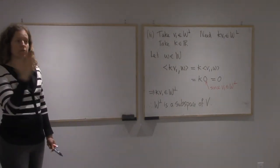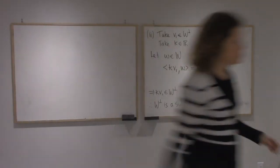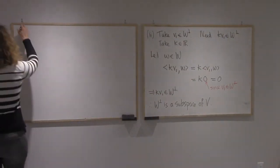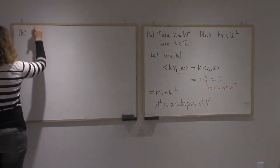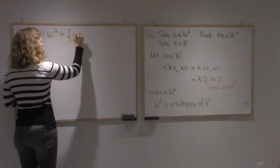Alright, so that proved the first part of the theorem. And then the second one, is it B of 2? B asks to show that W-intersect W-perp is the 0-vector.